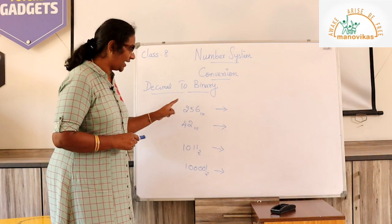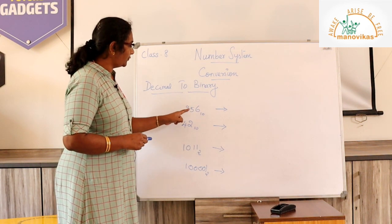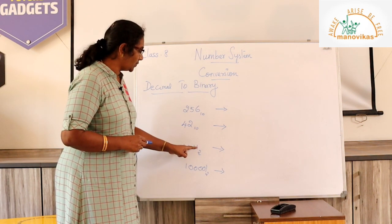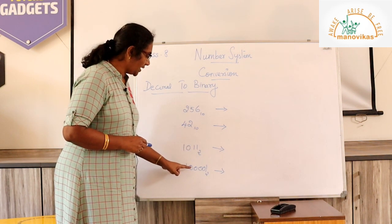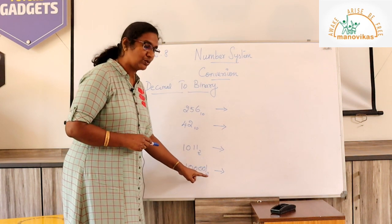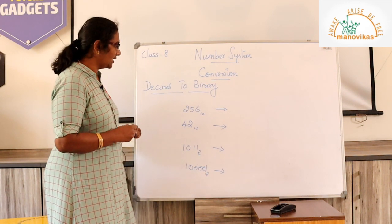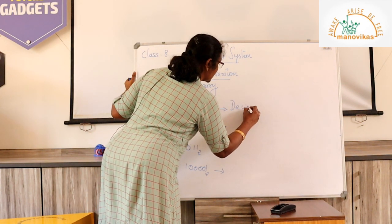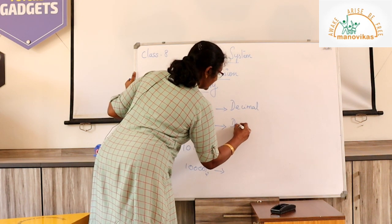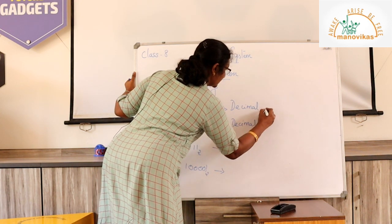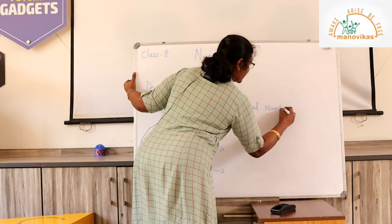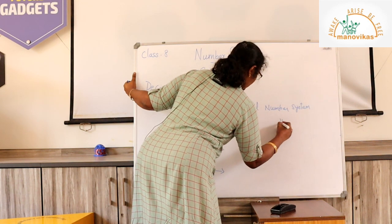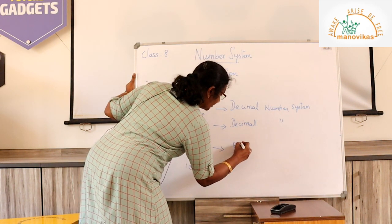Here are some examples which I have displayed: 256 to the base 10, 42 to the base 10, and 1011 to the base 2, and 1000001 to the base 2. Out of these, the first two numbers are classified as decimal number system, and the last two are binary number system.